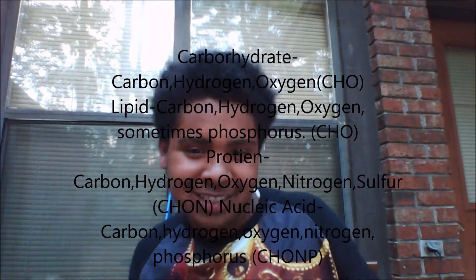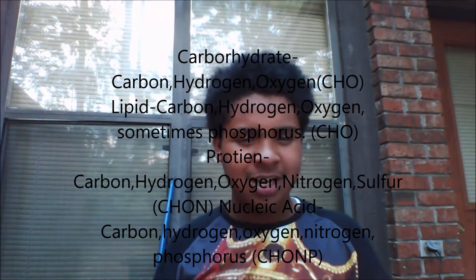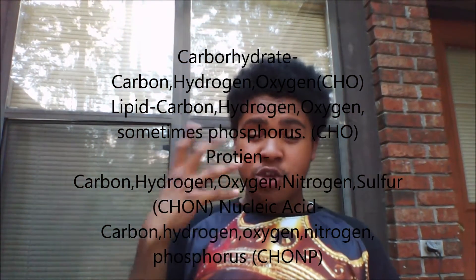Let's talk about the elements. For carbohydrates: carbon, hydrogen, and oxygen. Carbohydrates — literally — carbon, hydrogen, oxygen. As for lipids, you have carbon, hydrogen, oxygen, and phosphorus. The protein elements are carbon, hydrogen, oxygen, nitrogen, and sulfur.